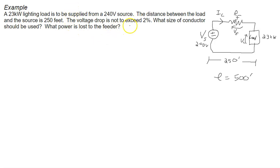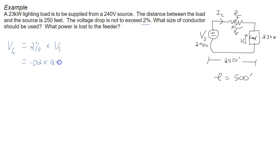When we say the voltage drop must not exceed 2%, that means 2% of the source voltage. The voltage drop in the feeder VF is at maximum 2% of Vs, which means 0.02 multiplied by 240 volts. So the maximum value for VF is 4.8 volts.